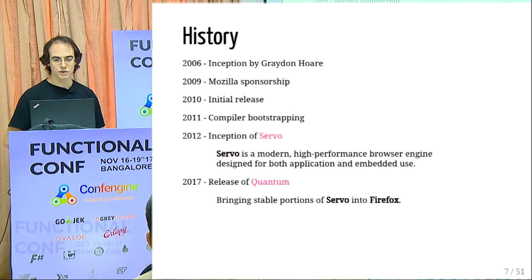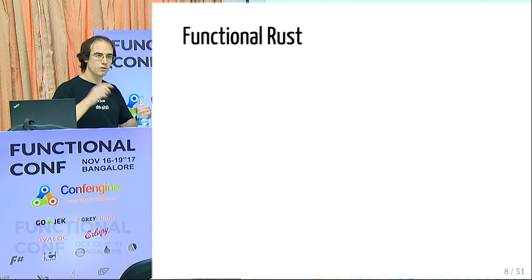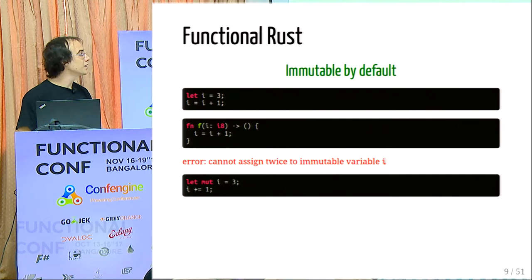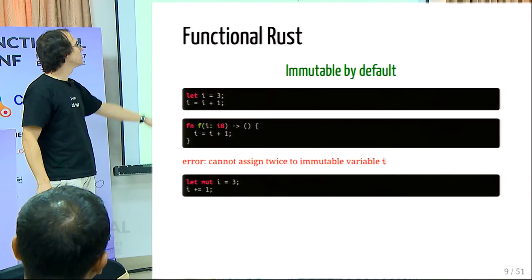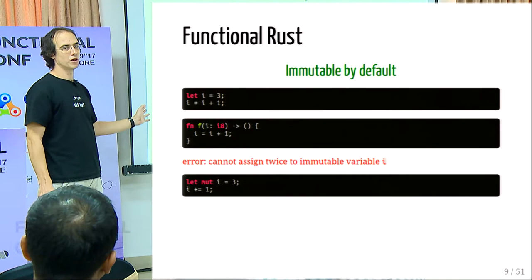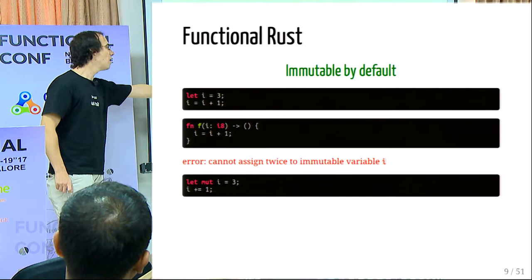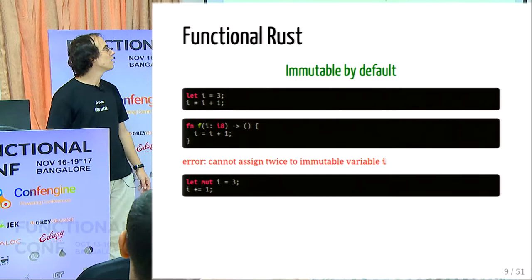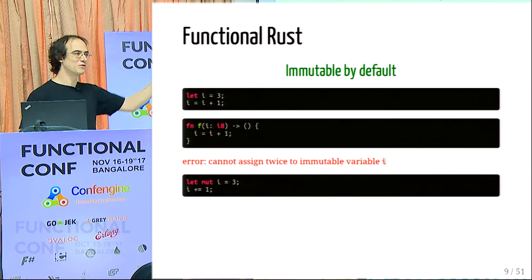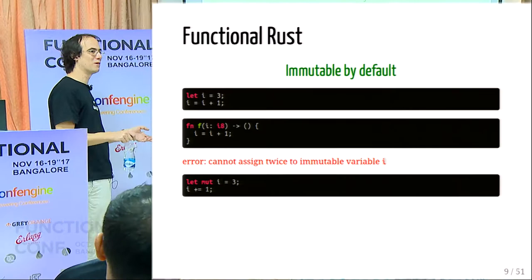Now let's go into the real stuff — the functional features of Rust. First, it is immutable by default. If you declare a variable using the `let` syntax and try to assign something to it again, you'll get a compilation error: you cannot assign twice to an immutable value. If you want mutability, you have to use the `mut` keyword — kind of like `val` and `var` in Scala. By default it's immutable, which is already a big shift for people coming from C and C++.